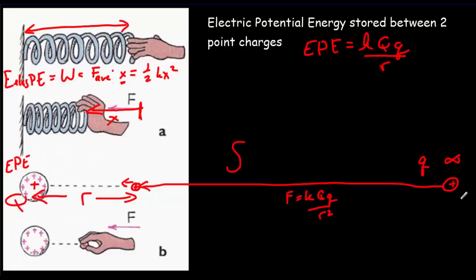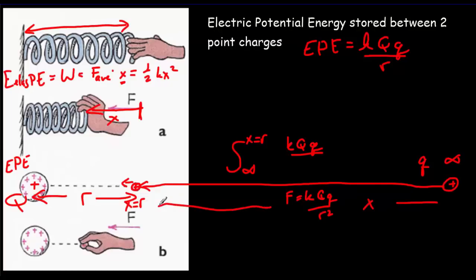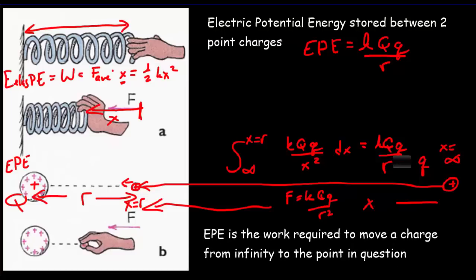This proof also leads to the formal definition: the electric potential energy is the work required to move a charge from infinity to the point in question. Equivalently, the electric potential is the work per unit charge required to move a test charge from infinity to the point in question.